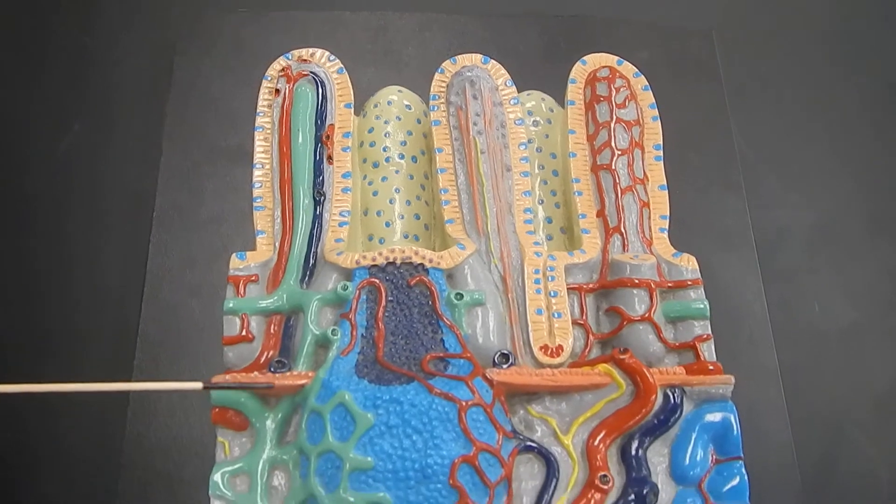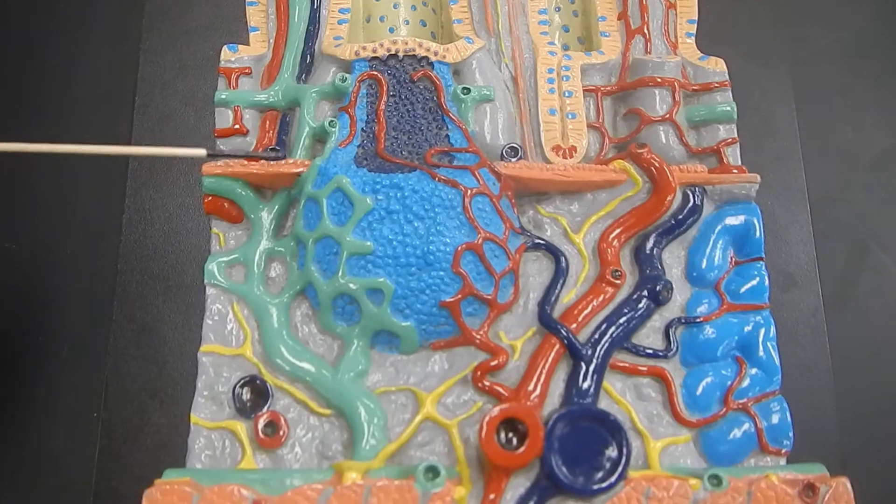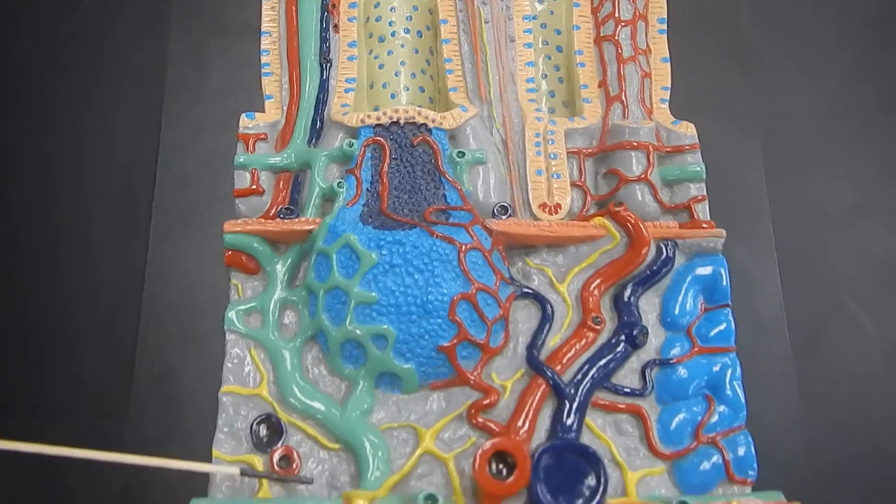From there, we go down to this structure, which is called the muscularis mucosae. And that divides the mucosa from the submucosa.